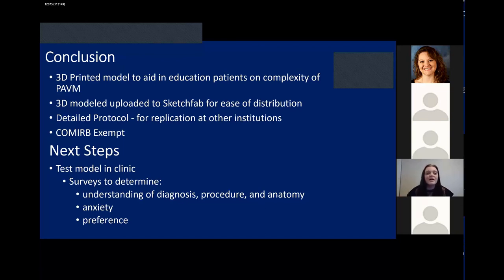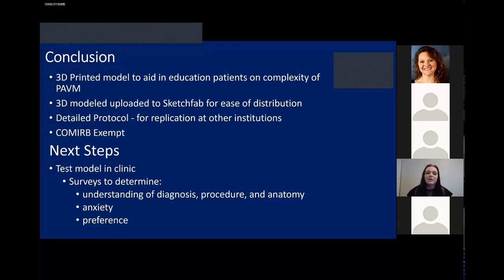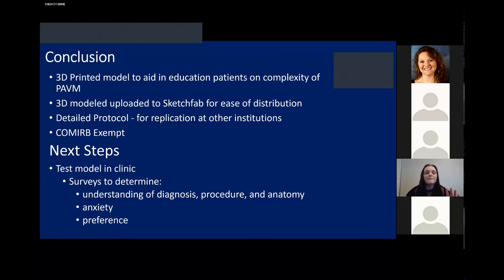The next step for our project is to actually test the model in the clinic. We've developed surveys to measure the patient's level of understanding of the diagnosis, the procedure, and the anatomy. We'll also ask about their level of anxiety in relation to their diagnosis and procedure. Finally, we'll ask about their preference for visual tools — whether they prefer the CT scan, the model, both, or no visual aid at all.